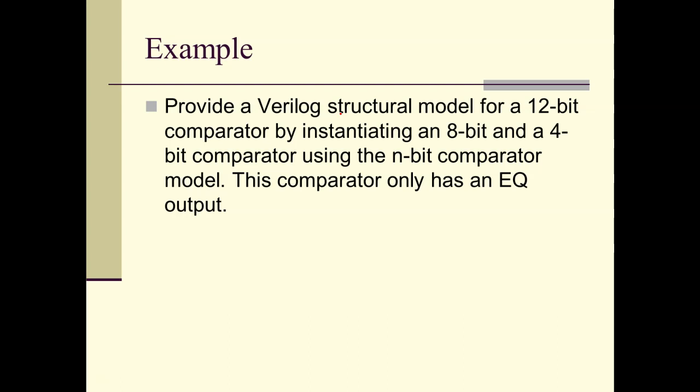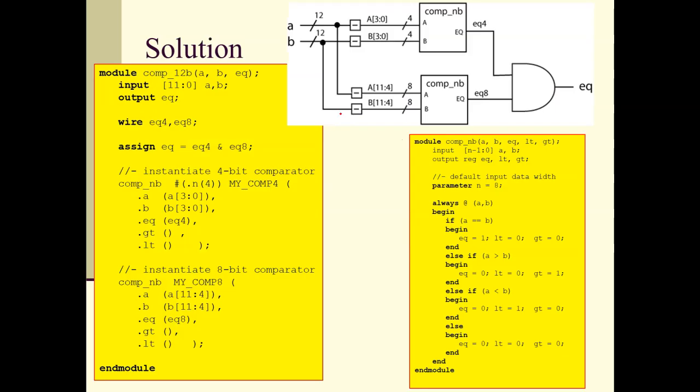Here's an example: we're going to make a 12-bit comparator by instantiating 8-bit and a 4-bit comparator using the generic comparator module. So here we go. This is our generic comparator module. This is our black box diagram, which we're going to do first, and these are how we're going to map it.